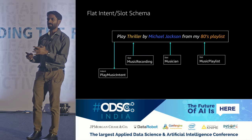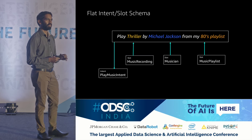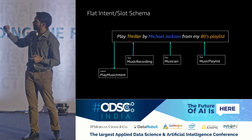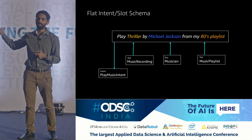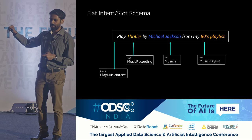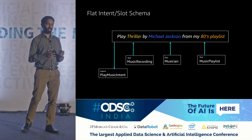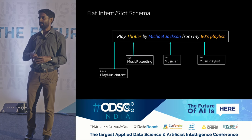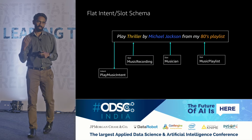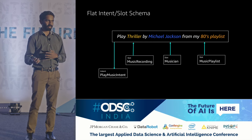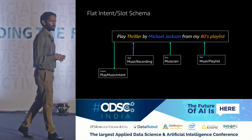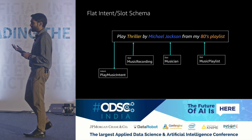A slot is like an entity — a variable in an utterance. The same structure could apply to 'play Parachutes by Coldplay from my 2000s playlist.' You need your domain, intent, and slot — picked up by the Alexa cloud. This is a flat intent or flat slot schema. It's fairly easy to represent and has worked well. For simple statements like this it works very well, and it's also easy to represent. But there are certain problems with it.